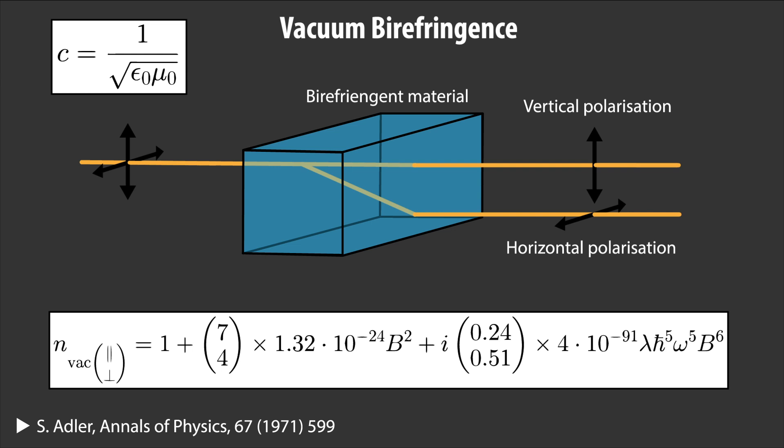Thus, light no longer has a unique speed, and the speed depends on the polarization of the light.